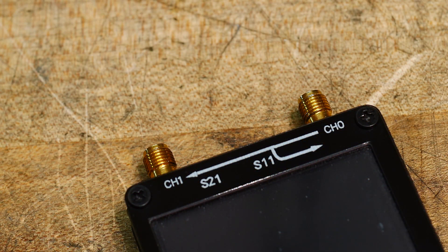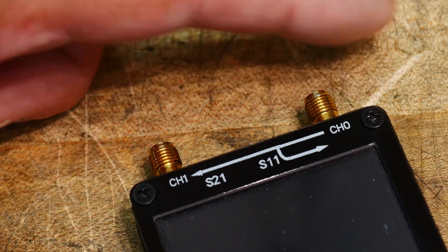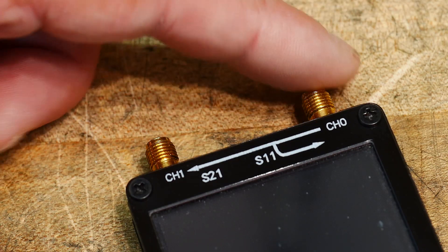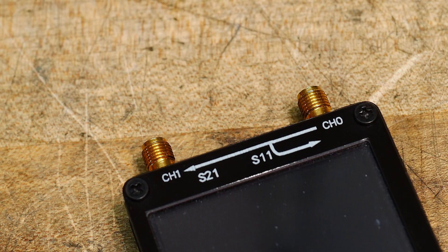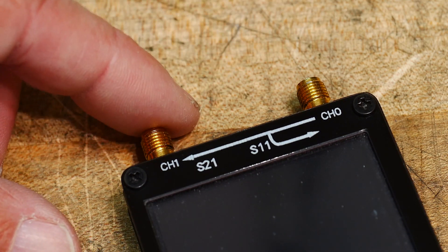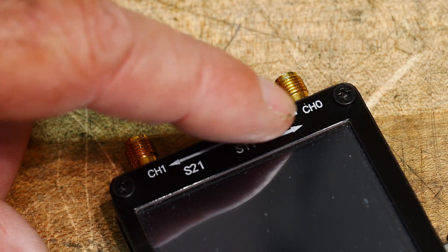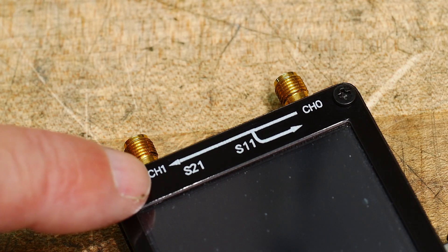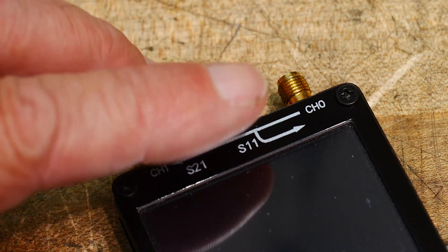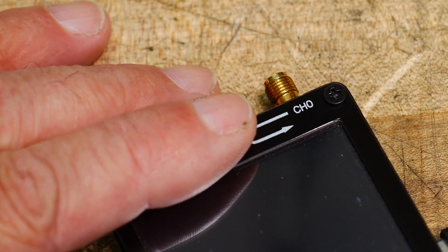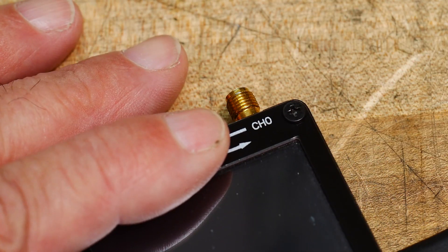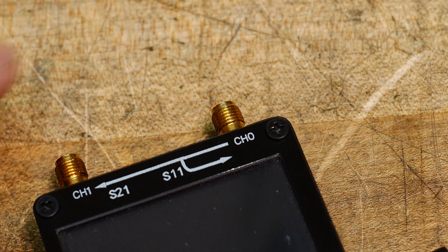So at the top of the NanoVNA are going to be two connectors. These are what are called SMA connectors but that doesn't matter. If you want to connect different things to your NanoVNA you might need an adapter. So there's two. This one's labeled CH0. That stands for channel 0. And this one stands for CH1, channel 1. And then there's these other things in here. We're going to ignore those. And channel 1 we're going to ignore that one too. This is the only connector you need to worry about which is channel 0.